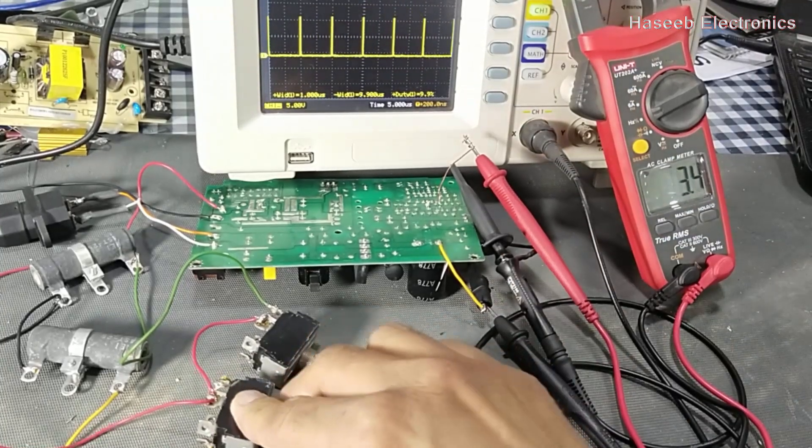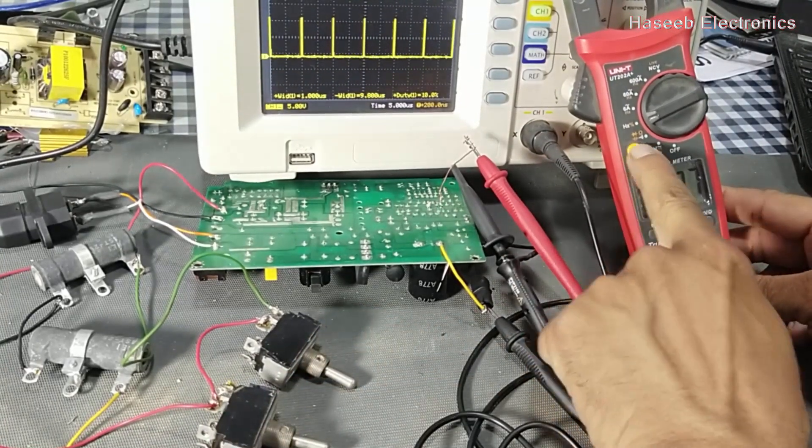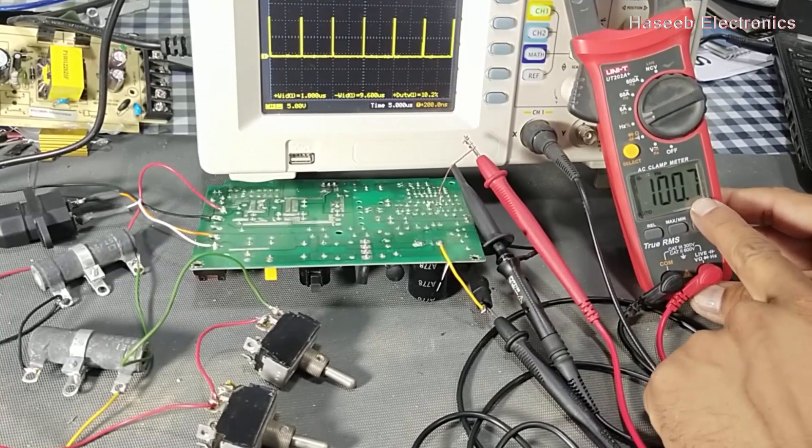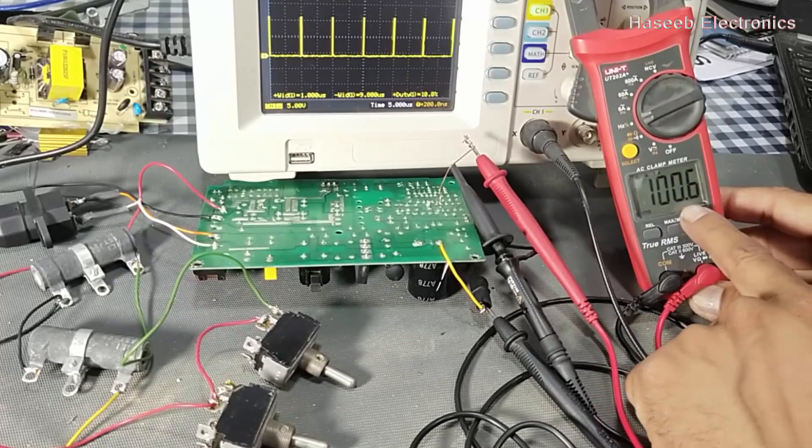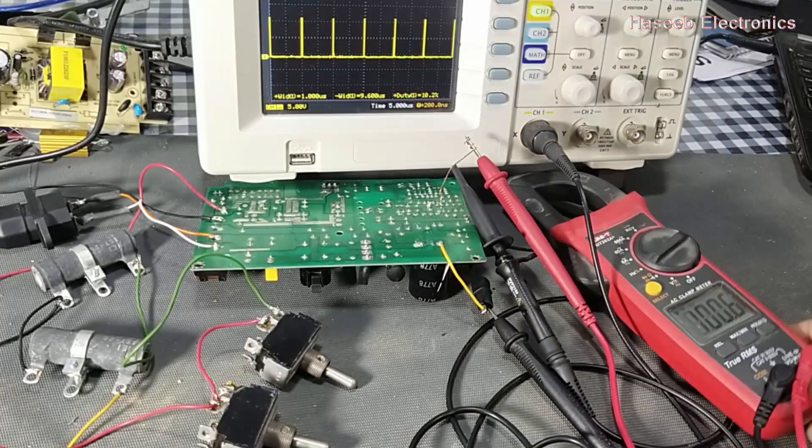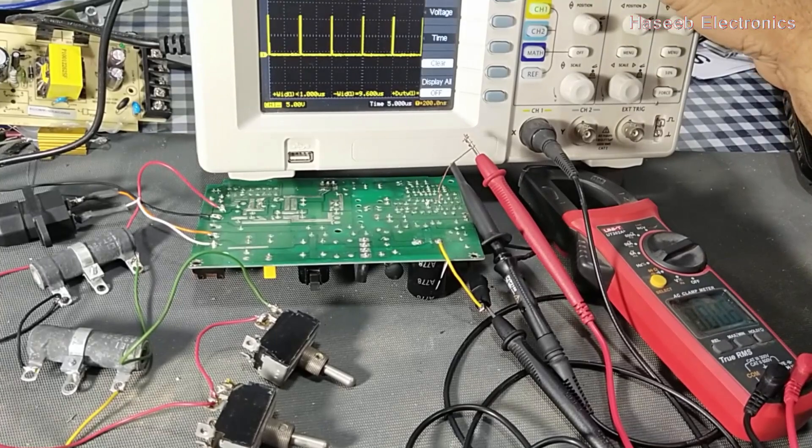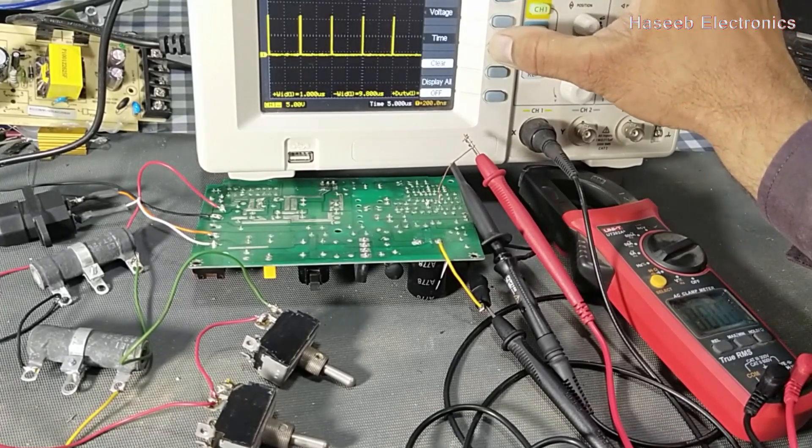We can check frequency by pressing this button. It is 100 kilohertz, 100.7 kHz. And if we measure frequency time, frequency is 100 kilohertz.